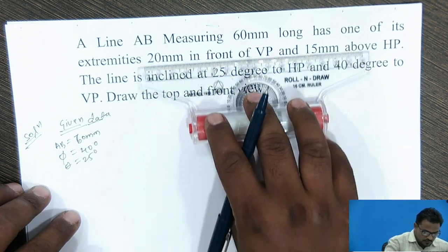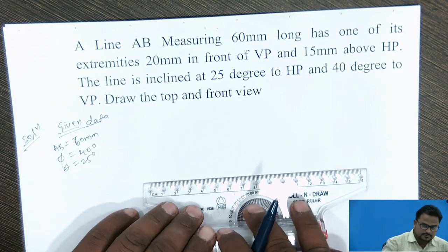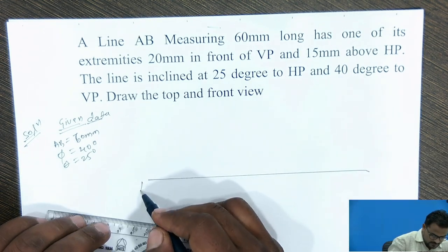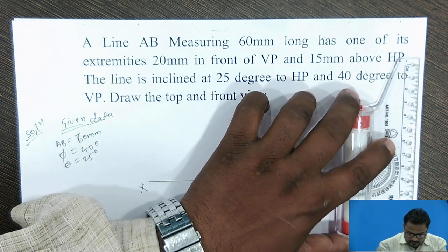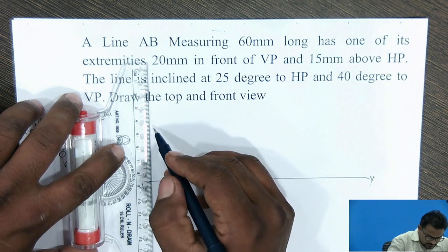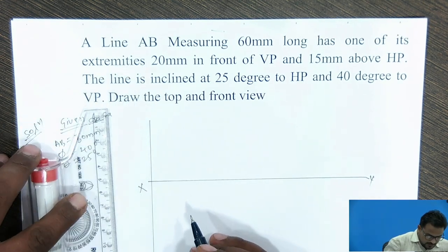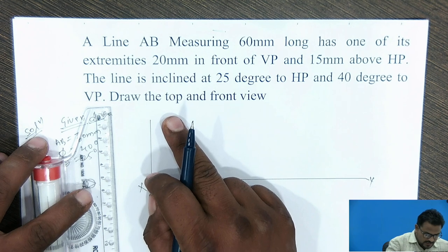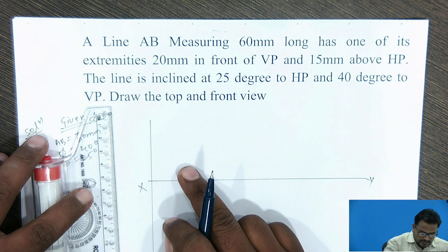Now I have to take a reference line, that is X and Y. I have to take the inclinations, and the given positions are 20 mm in front of VP and 15 mm above HP.